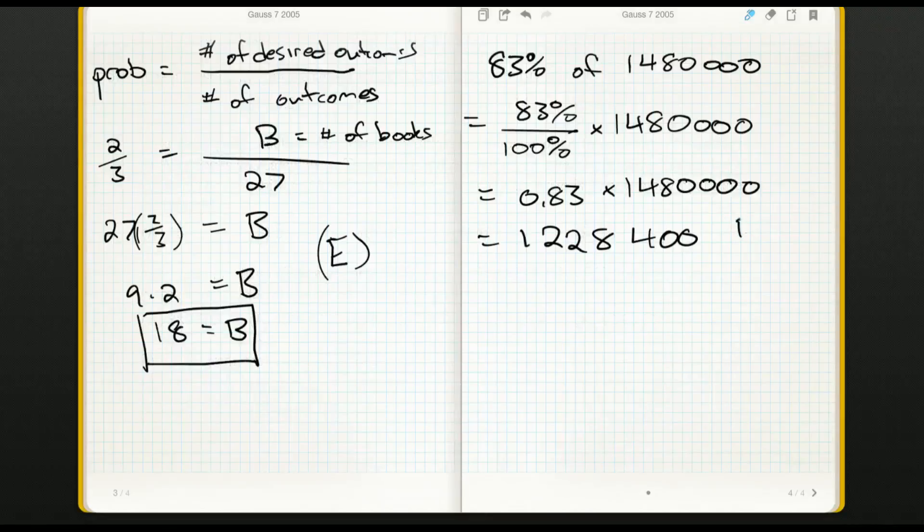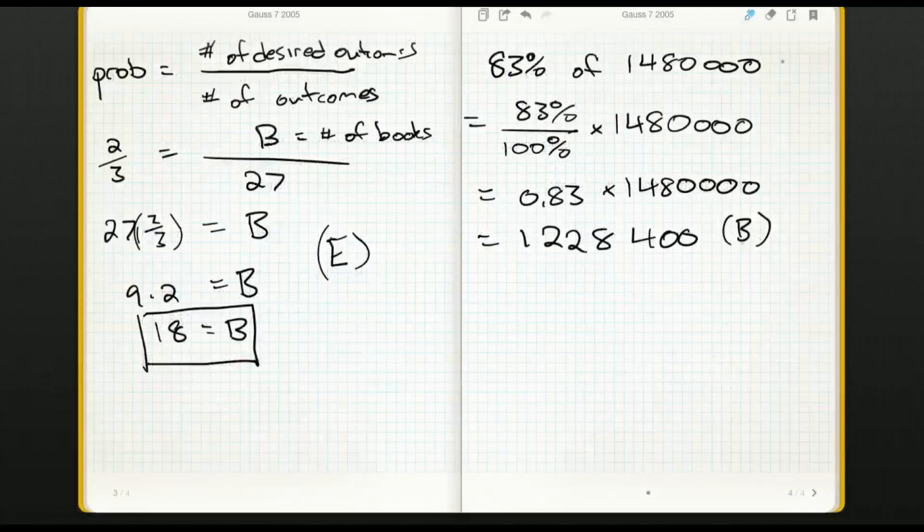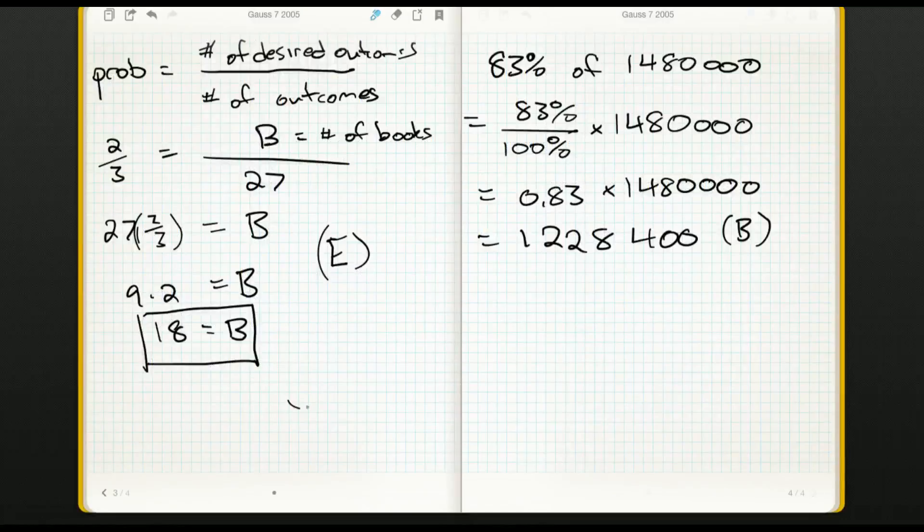Okay, and that about does it for question number seven. We could have, as I do try and avoid calculators, done this by hand. You know, we could have set up a little something like 1,480,000 times 0.83, kept decimals in there and multiplied it up by hand.